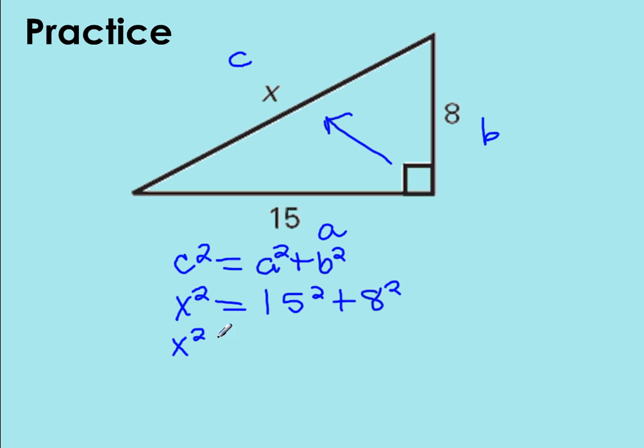When I go to simplify this, I find that 15 squared is 225 plus 64, and we find that x squared will be equal to 289.